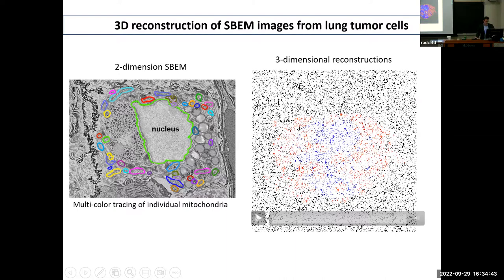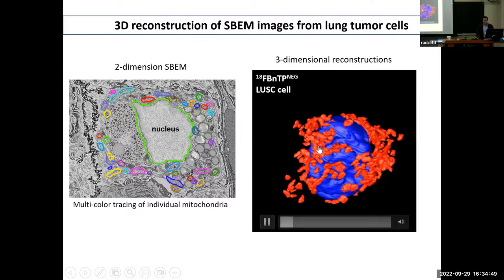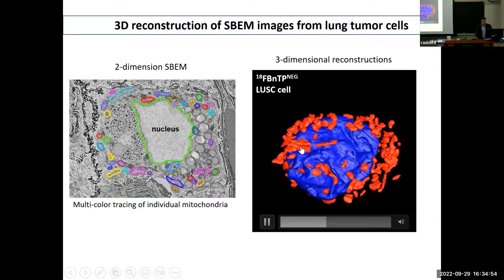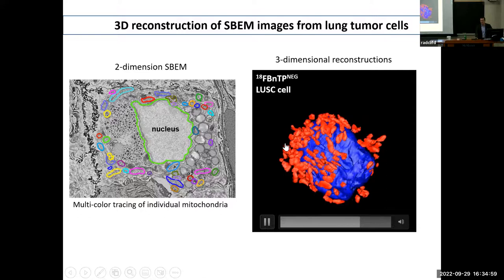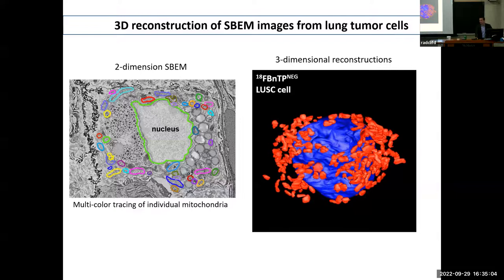A 3D-reconstructed lung adeno tumor cell — positive for our FBNTP tracer — shows the nucleus in blue and beautiful mitochondrial networks in red. There are long fused networks localized both perinuclear and throughout the cytoplasm. The squamous cell, which is FBNTP-negative, shows completely opposite: highly fragmented networks, mostly localized perinuclear. We suspected these mitochondria, though numerous and abundant, are not functional.